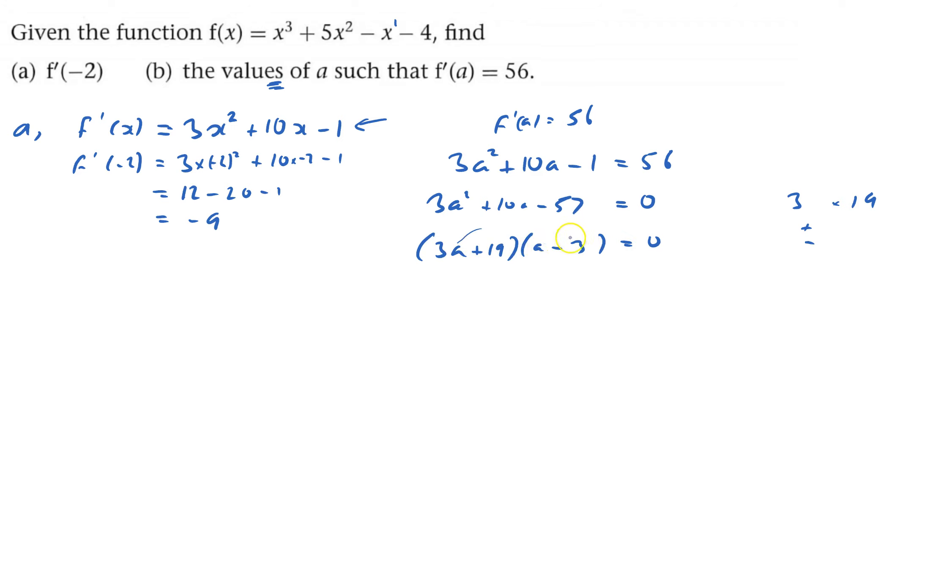Just check, 3a² minus 9a's plus 19a's makes plus 10a's, and then minus 57. So I've got either 3a + 19 = 0, or a - 3 = 0.